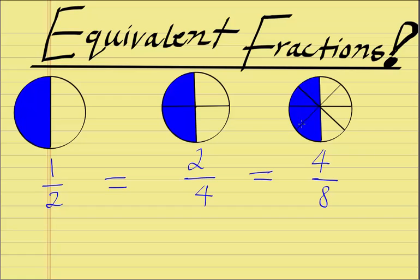It doesn't matter how many parts it's broken down into, the same amount of area is shaded. So they are equal fractions, even if they have different numerators and different denominators. So all these numerators are different, and all these denominators are different, but they are still the same. And they're known as equivalent fractions.